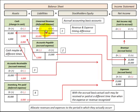In accrual accounting we use four basic accounts to allocate these revenues and expenses. For our liabilities on the balance sheet, they'd be our unearned revenue — or deferred revenues — and our accounts payable, referred to as accrued expenses. For our assets on the balance sheet, we use accounts receivable, called accrued revenue, and inventory and prepaid expenses, referred to as deferred expenses.